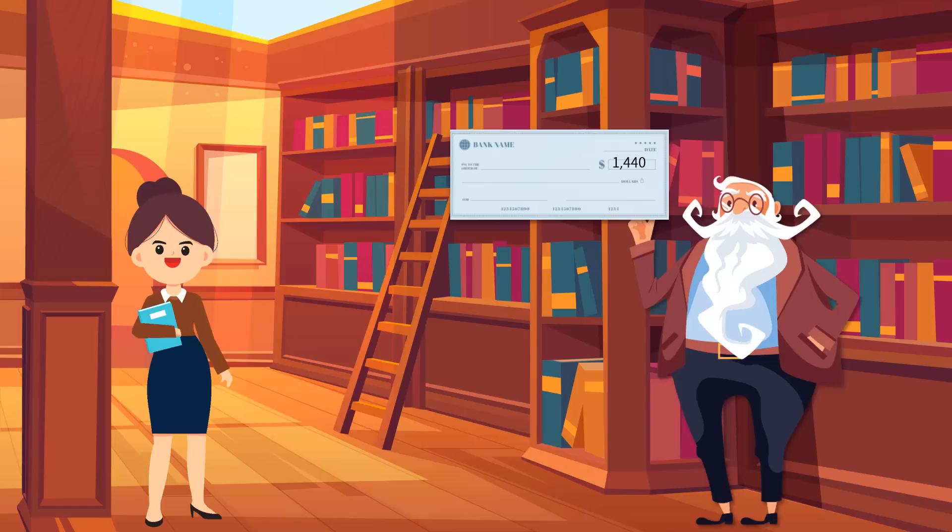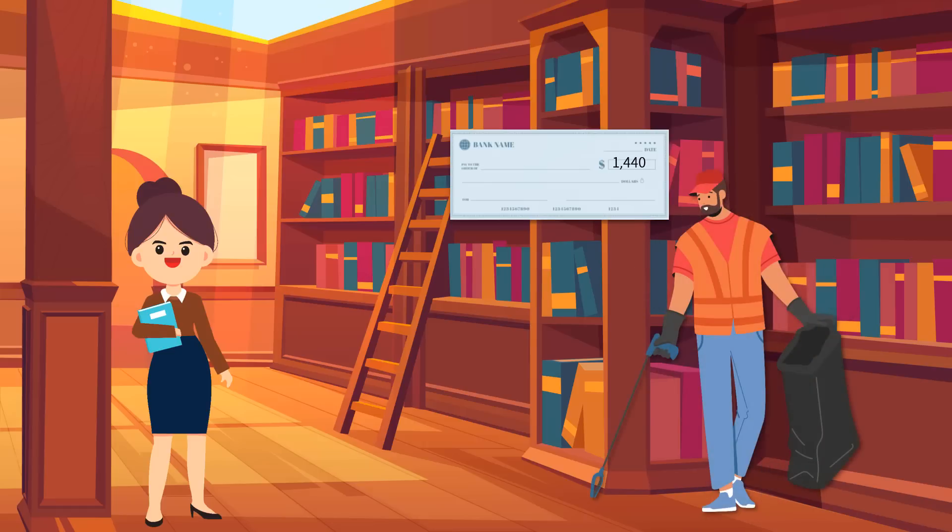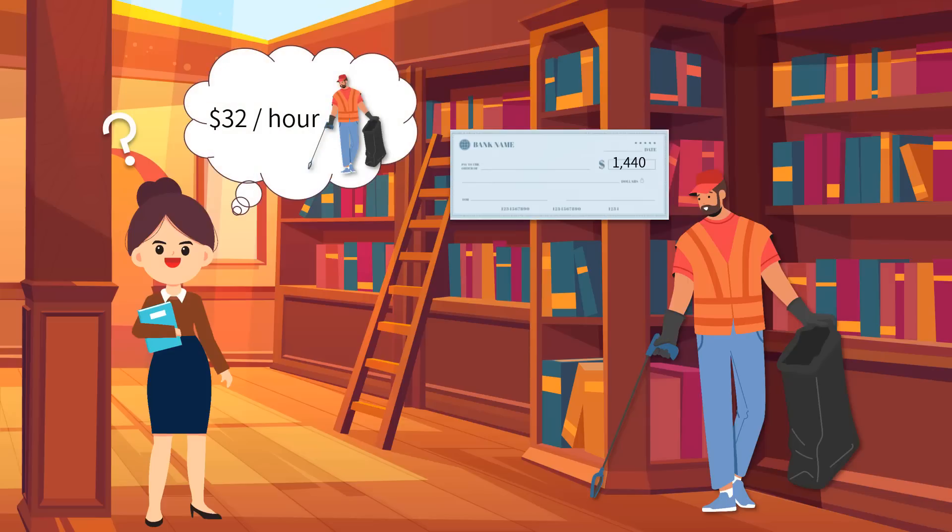Ms. Smith tried to plan this money. She was going to hire a part-time worker to help her clean up the library together periodically. She knew that such a worker was usually paid $32 per hour on average. How many hours of part-time work can the library afford monthly?